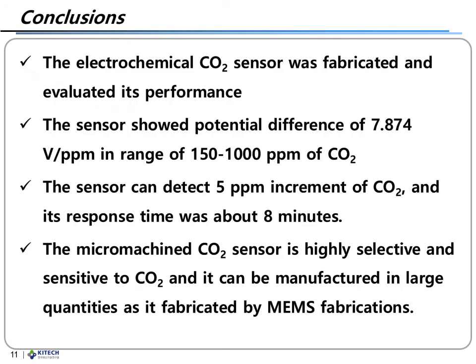Here are the conclusions. The electrochemical carbon dioxide sensor was fabricated by MEMS and its performance as a carbon dioxide sensor was evaluated. The sensor showed a potential difference of 7.874 millivolts per ppm in the range of 150 to 1000 ppm of carbon dioxide. The sensor can detect 5 ppm increments of carbon dioxide and its response time was about 8 minutes. The micromachined carbon dioxide sensor is highly selective and sensitive to carbon dioxide, and it can be manufactured in large quantities as it is fabricated by MEMS fabrication.